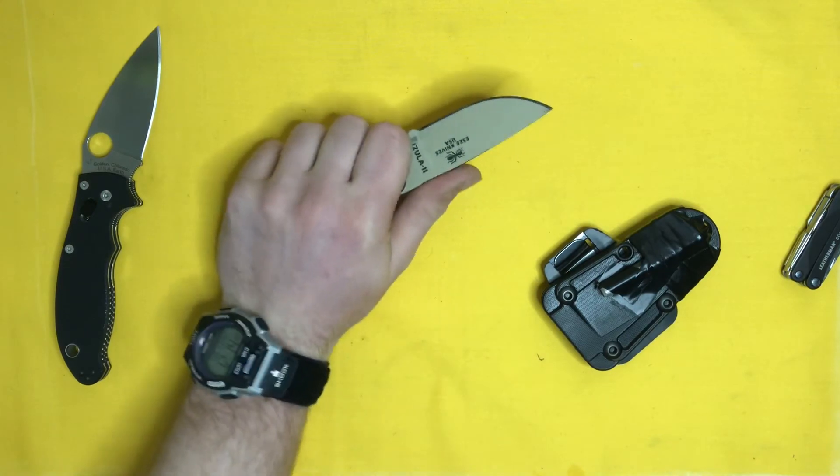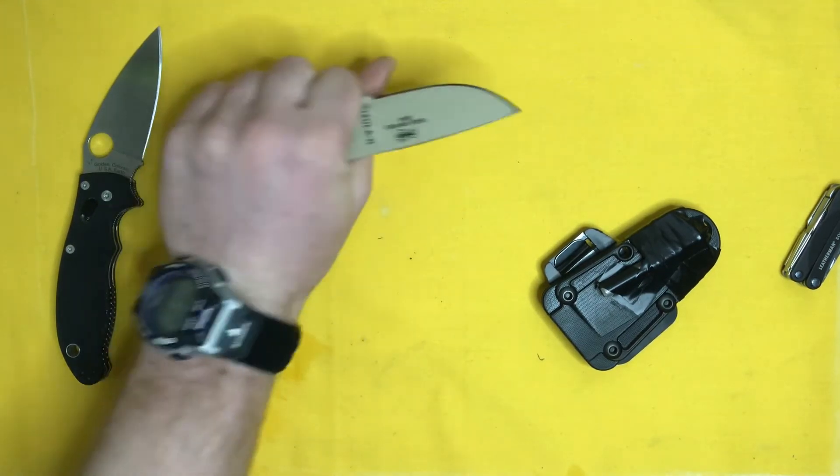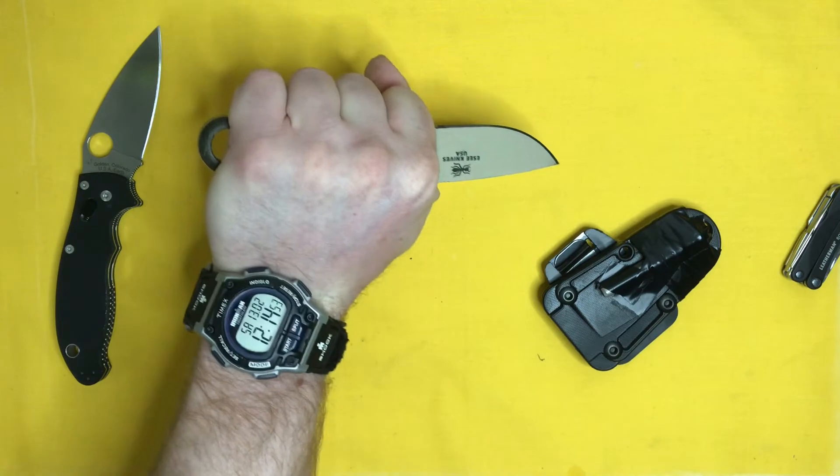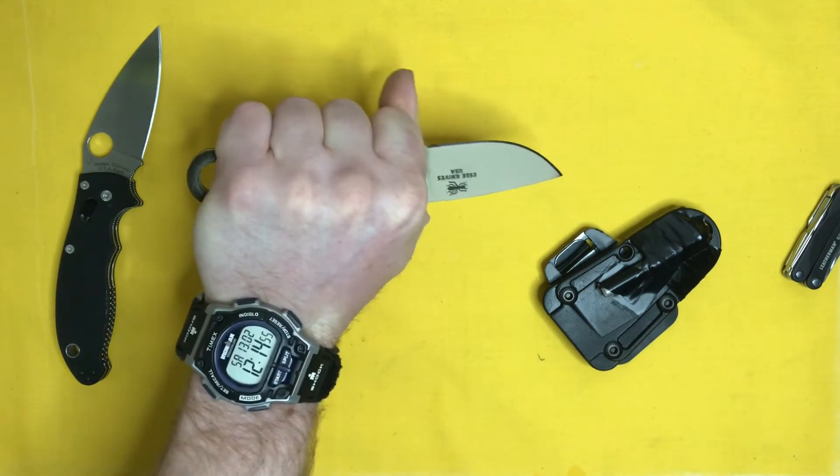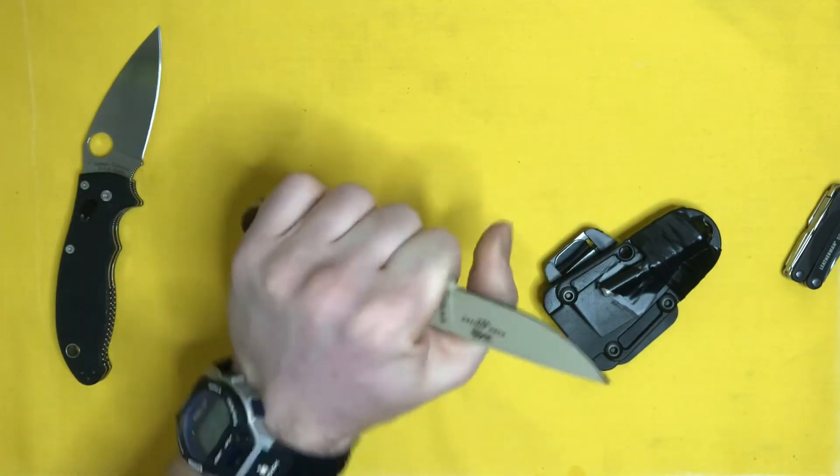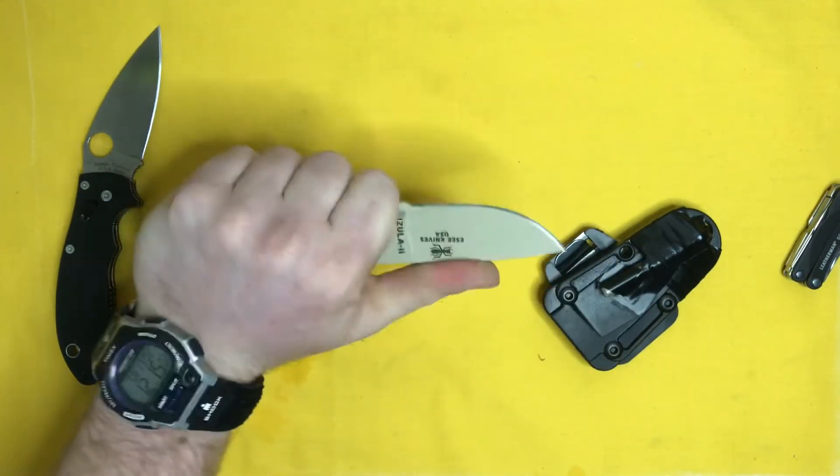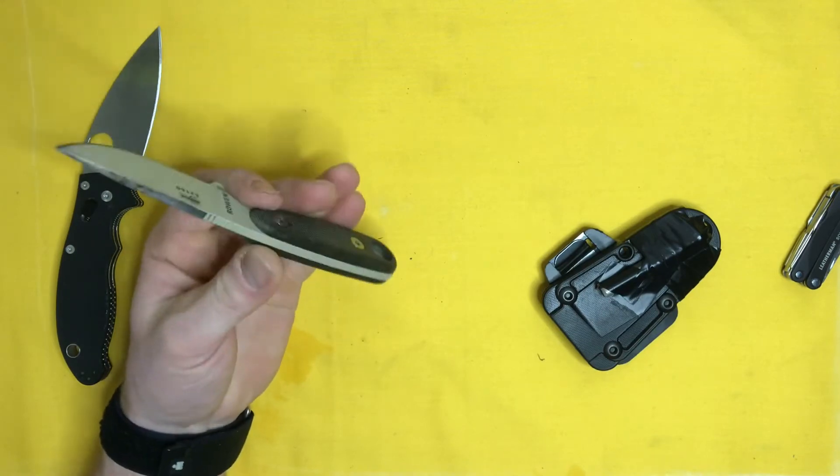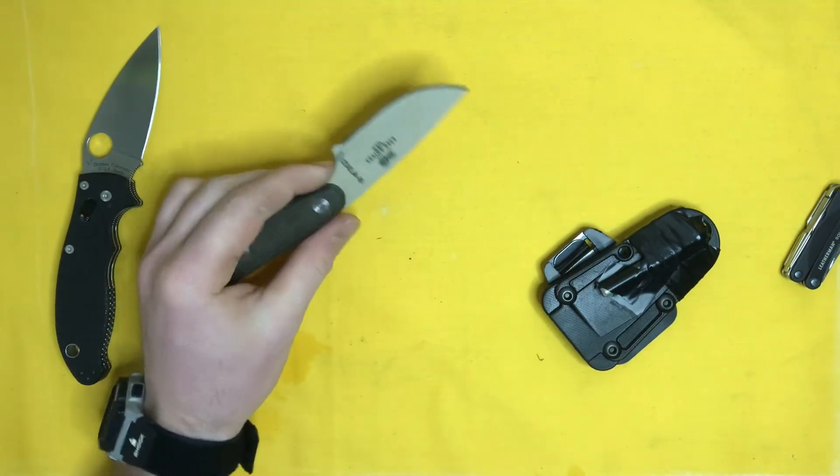So if you've got smaller hands, mine are about large, big mediums, small larges, I can get full grip and have a little bit of room left. So if you have large hands, you could probably still get a full grip on this knife. If you've got medium hands, you could probably get away with the ESEE Azula I and be probably just as comfortable with a little bit less bulk and knife to carry around if that's a concern of yours.